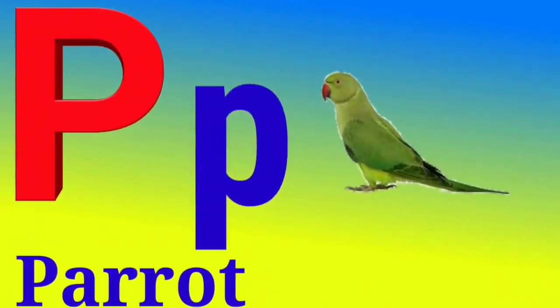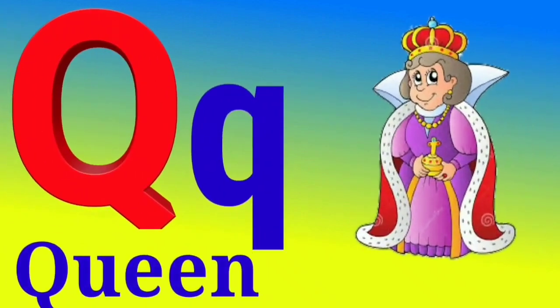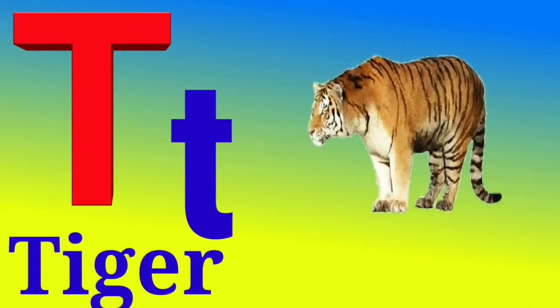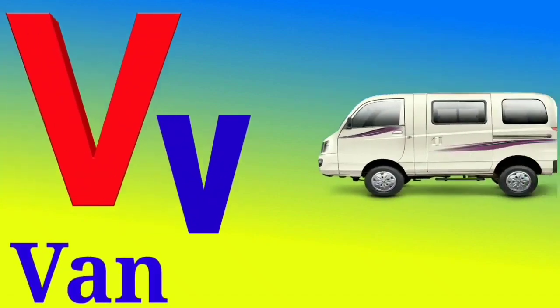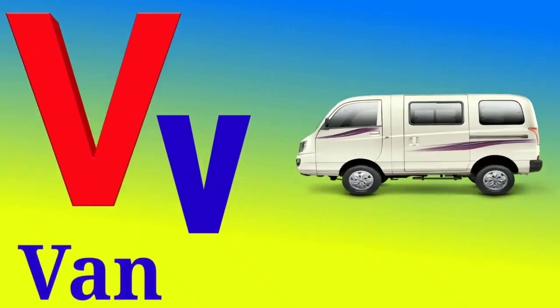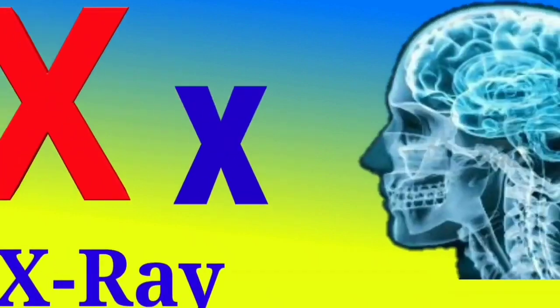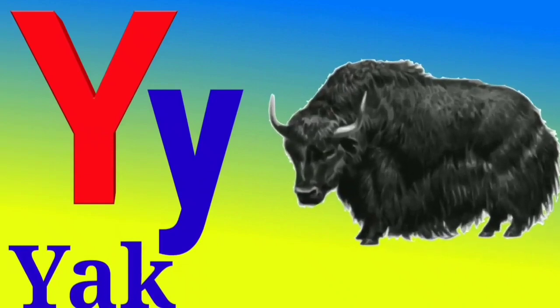O for orange, P for parrot, Q for queen, R for red, S for sun, T for tiger, U for umbrella, V for van, W for watch, X for x-ray, Y for...